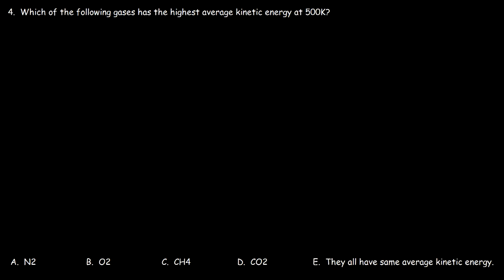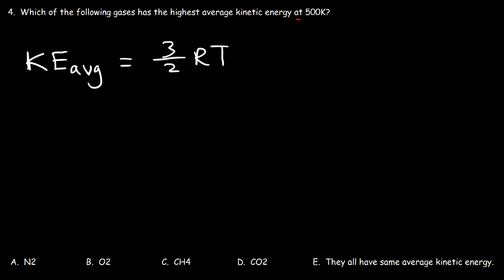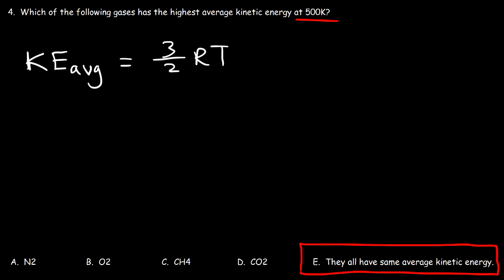Number four: which of the following gases has the highest average kinetic energy at 500 Kelvin — nitrogen gas, oxygen gas, or carbon dioxide? Keep in mind the average kinetic energy equals 3/2 times RT, so it depends only on temperature. Since every gas is at the same temperature — 500 Kelvin — they all have the same average kinetic energy. The average kinetic energy does not depend on the identity of the substance; it simply depends on the temperature.